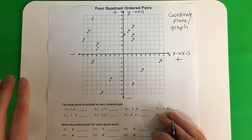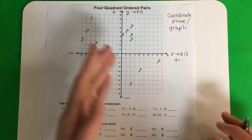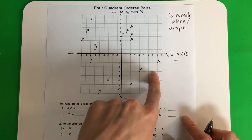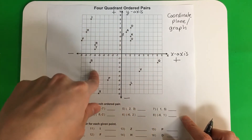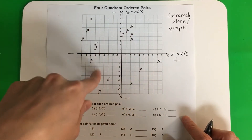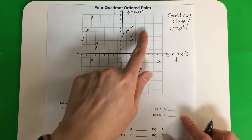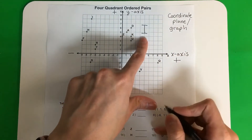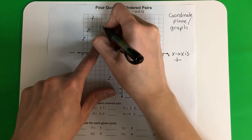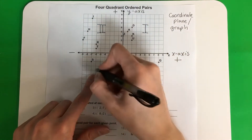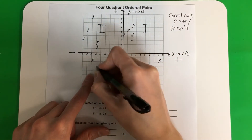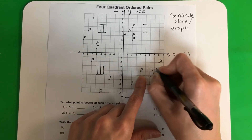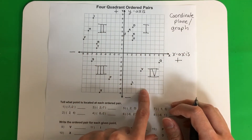Now, as you can see, the coordinate plane has four parts. These are called quadrants — like 'cuatro,' quadrants. This is quadrant one. We put a big I for quadrant one. This is quadrant two. This one here is quadrant three. And this one here is quadrant four. And yes, we write them in Roman numerals.